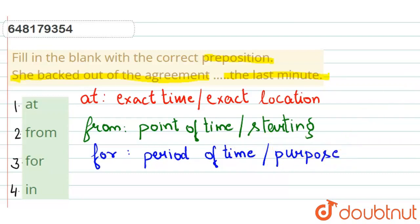Then the last option that we have, it is in. In is used for place. जब हम किसी place की बात करेंगे, तो हम in को use करते हैं. इसलिए हम इसे preposition of place भी बोलते हैं.